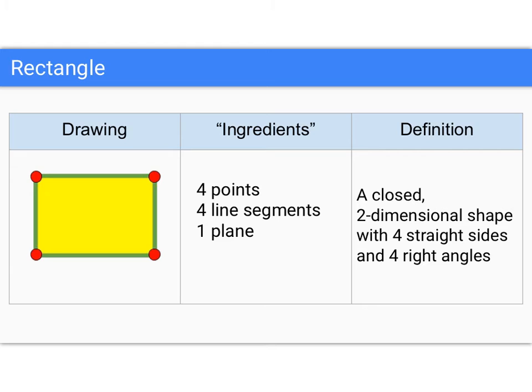You could also make a rectangle. For this one, you're going to need four points and four line segments and one plane. And of course, I didn't mention it, but we also have four angles in here.